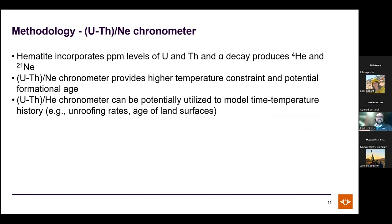The uranium-thorium-neon chronometer works because hematite incorporates small amounts of uranium and thorium, and alpha decay produces helium and neon isotopes. Measuring uranium-thorium contents alongside neon isotopes yields a chronometer. The reset temperature is around 200-250°C. Through irradiation and stepwise helium measurements, unroofing ages and land surface ages can also be obtained.